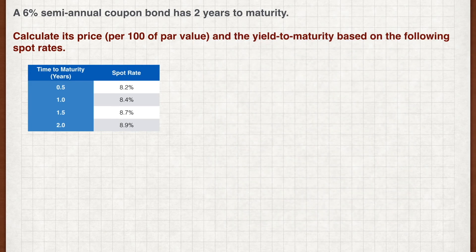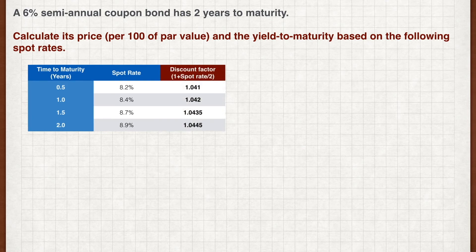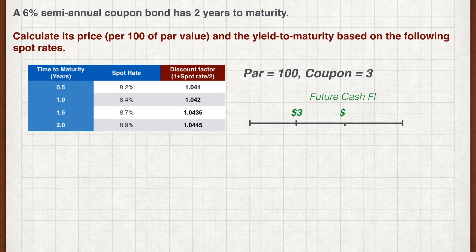And we're back. As this is a semi-annual coupon bond, each period is half a year. Remember to divide each of the spot rates by two to get the appropriate discount factors. Par value is 100, and the coupon per half year is half of six percent, which is three dollars per period. So the four future cash flows are three dollars for the first three periods and 103 at maturity.